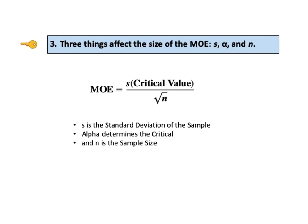Since the sample standard deviation S is in the numerator, a larger value of S will give a larger value of margin of error, likewise the critical value. On the other hand, N is in the denominator, so a larger value of N, the sample size, will decrease the margin of error.